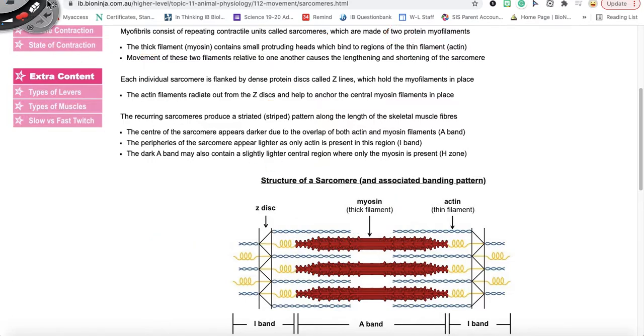Now the recurring sarcomeres produce a striated or striped pattern along the length of the skeletal muscle fiber.